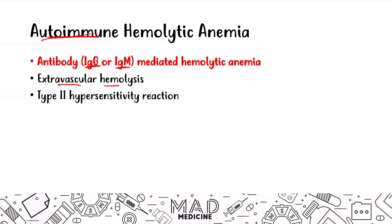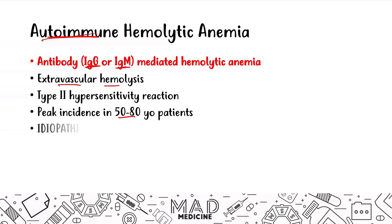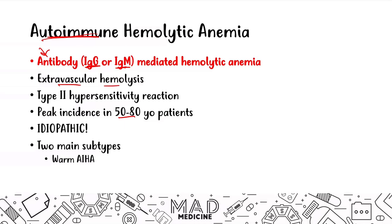The peak incidence usually occurs in patients who are 50 to 80 years old, and this is often idiopathic. There are two main subtypes based on the antibody. If you have predominantly IgG, you're going to have warm hemolytic anemia. If you have predominantly IgM, you're going to have cold hemolytic anemia. Certain bacteria like mycoplasma pneumoniae can cause the cold IgM-mediated type.